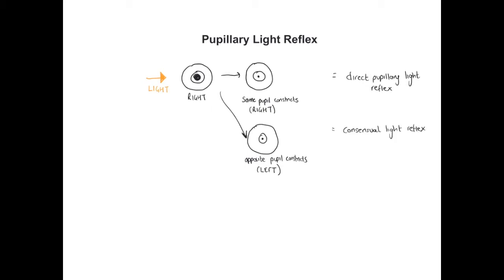When we shine a pen torch into a pupil, we do it one eye at a time. We're not only looking at what happens to the pupil in the eye we've shone the light into — we're also looking at the opposite eye to confirm that it constricts as well. The direct and consensual light reflexes tell us about the optic nerve, which detects light, and the nerves that carry the efferent signal to the muscle of the iris to constrict the pupil.